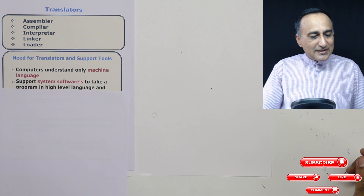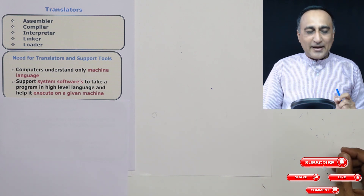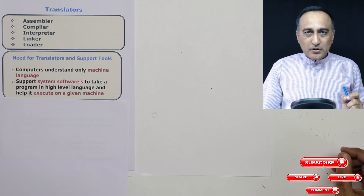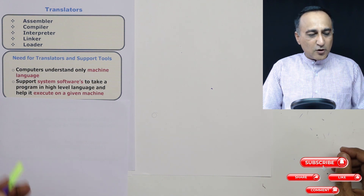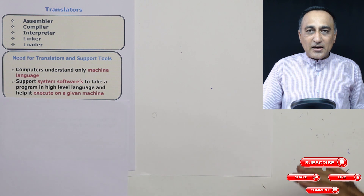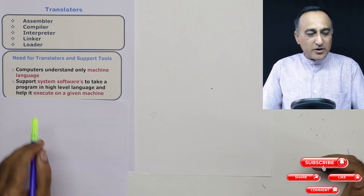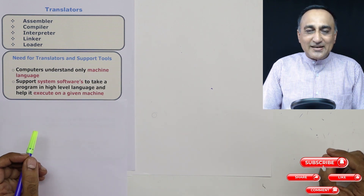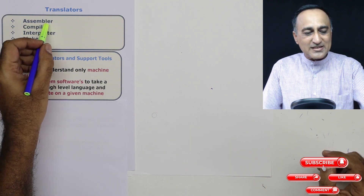Now, why do we need translators? Computers understand only ones and zeros, also known as machine level language. In order to write code in high level language or assembly language, we use software tools called system softwares, which take a program written in assembly or high level language and convert it into machine level language. For example, if code is written in assembly level language, the tool which converts it into machine level language is called the assembler.